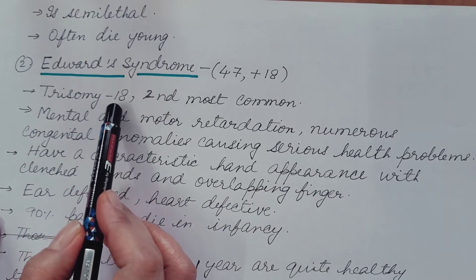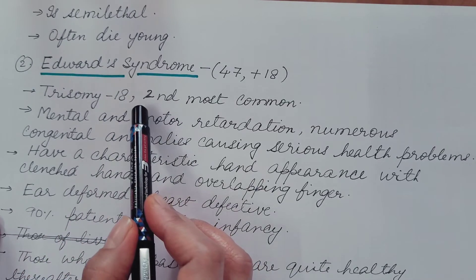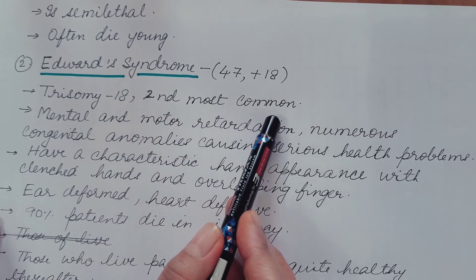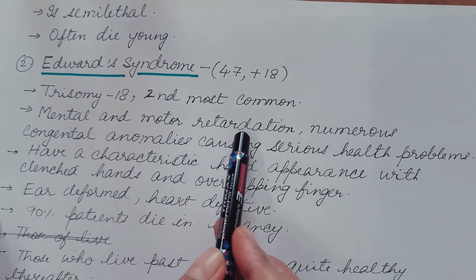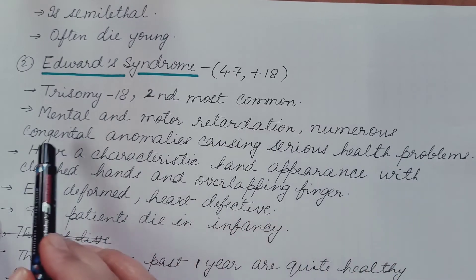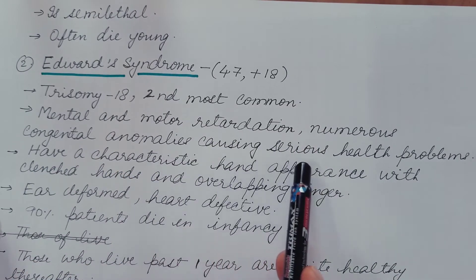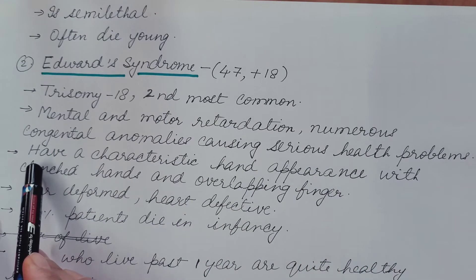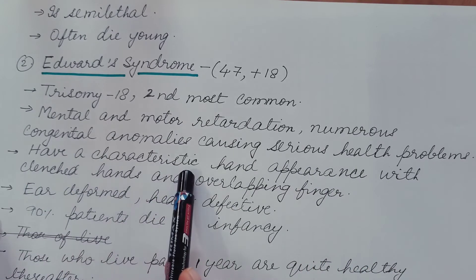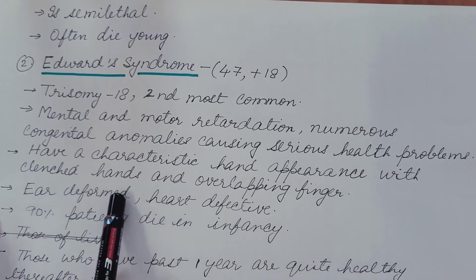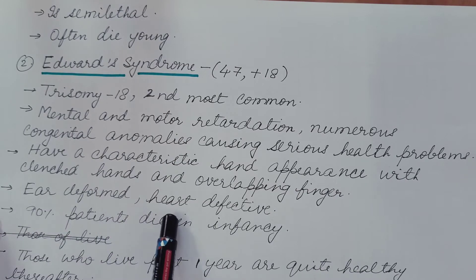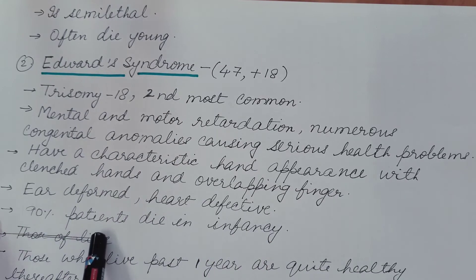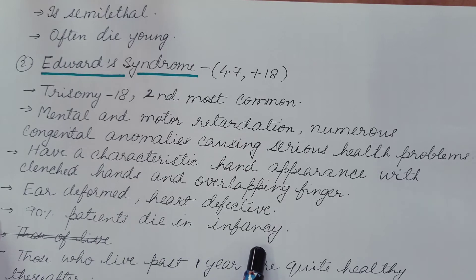Edward syndrome is written as 47,+18, meaning trisomy 18. An extra copy of chromosome 18 is present. It is the second most common autosomal trisomy syndrome after Down syndrome. Individuals show mental and motor retardation, and numerous congenital anomalies causing serious health problems. A characteristic feature is clenched hands with overlapping fingers. Ears are deformed and the heart is defective. Ninety percent of patients die in infancy, before one year of age.